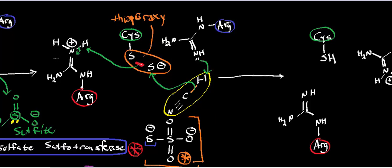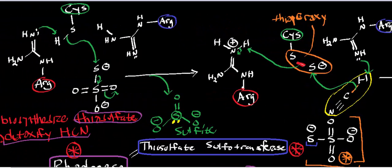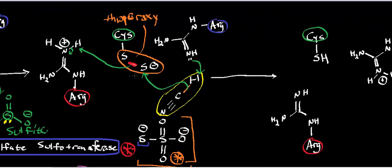One thing worth mentioning because it is very strange — we saw it in both mechanistic steps: you're getting nucleophilic attack on a negatively charged atom. That's not something you're used to seeing. Normally, when you think of something getting nucleophilically attacked, you're thinking of something that might be positively charged or at least partially positive. But this is a strange case where the enzyme actually forces this to happen — you attack the negatively charged sulfur on the thiosulfate, and then you attack the negatively charged sulfur on the thioperoxy group.